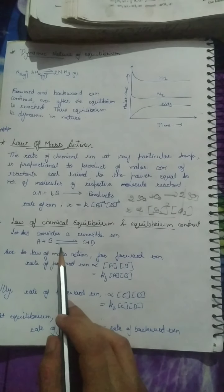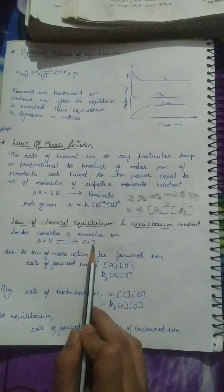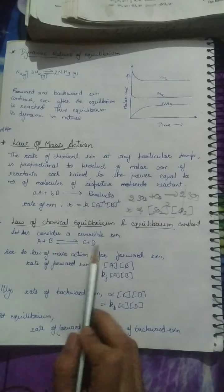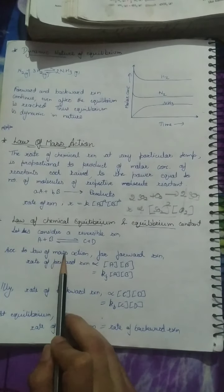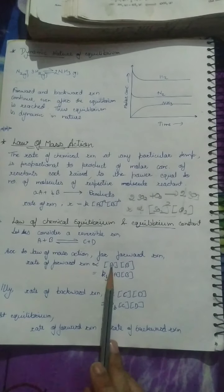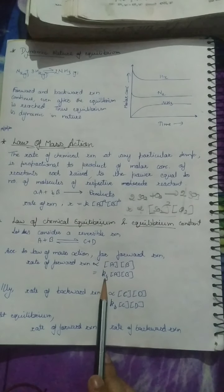Consider a reversible reaction: A plus B gives C plus D. This is a reversible reaction. According to the law of mass action, for the forward reaction when A plus B react to form C plus D, the rate of forward reaction is proportional to the concentration of A into concentration of B. We denote this constant as Kf because it is the constant for the forward reaction.